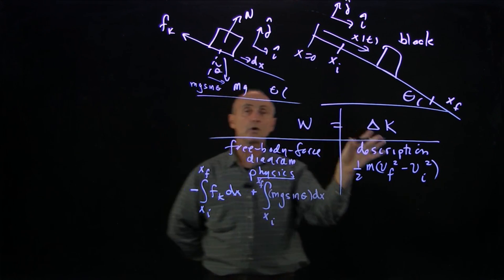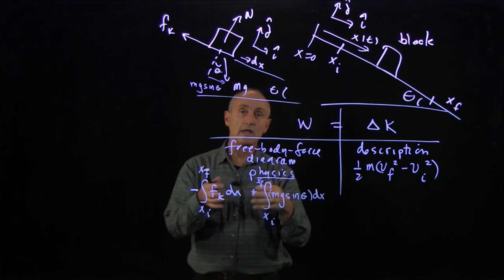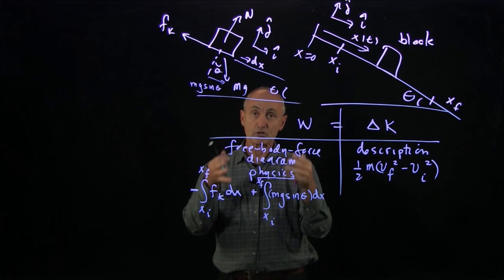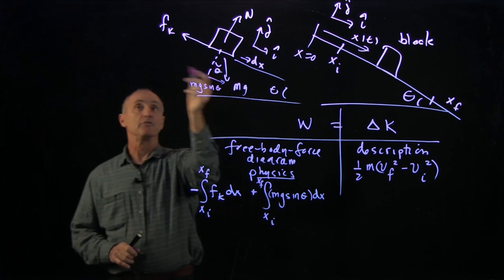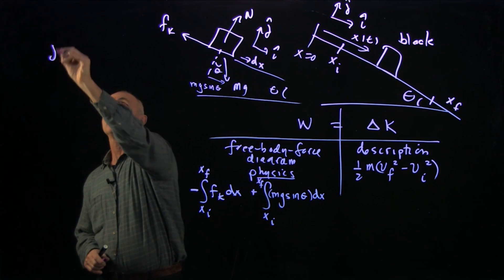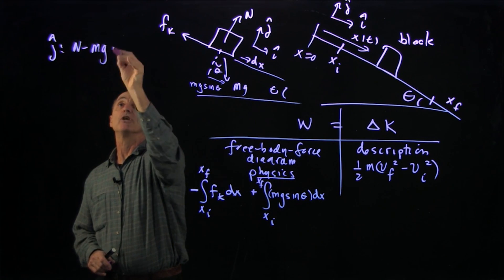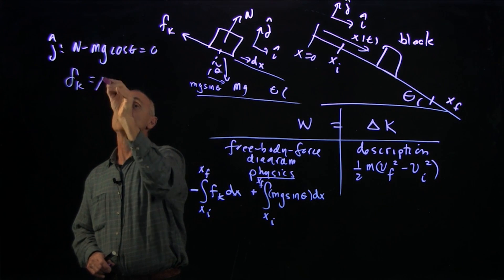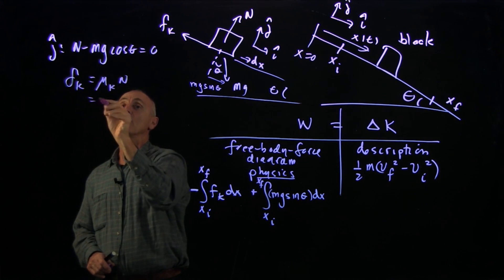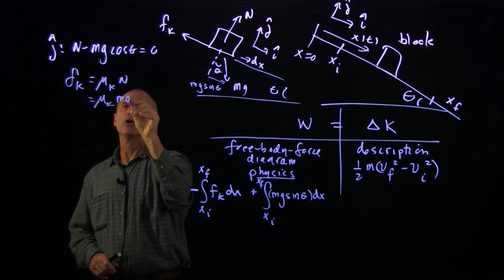And so when you're applying the work energy theorem, you need to integrate your forces and actually calculate the work. Now, if you looked in the j hat direction, and we applied Newton's second law, n minus mg cosine theta is 0. And our rule for friction is it's mu k times n, or mu k mg cosine theta.